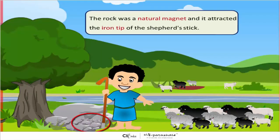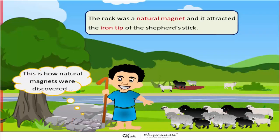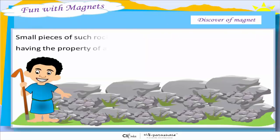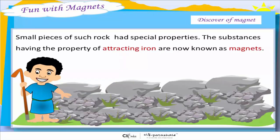The rock was a natural magnet and it attracted the iron tip of the shepherd's stick. This is how natural magnets were discovered. Such rocks were given the name magnetite after the shepherd. Small pieces of such rock had special properties. The substances having the property of attracting iron are now known as magnets.